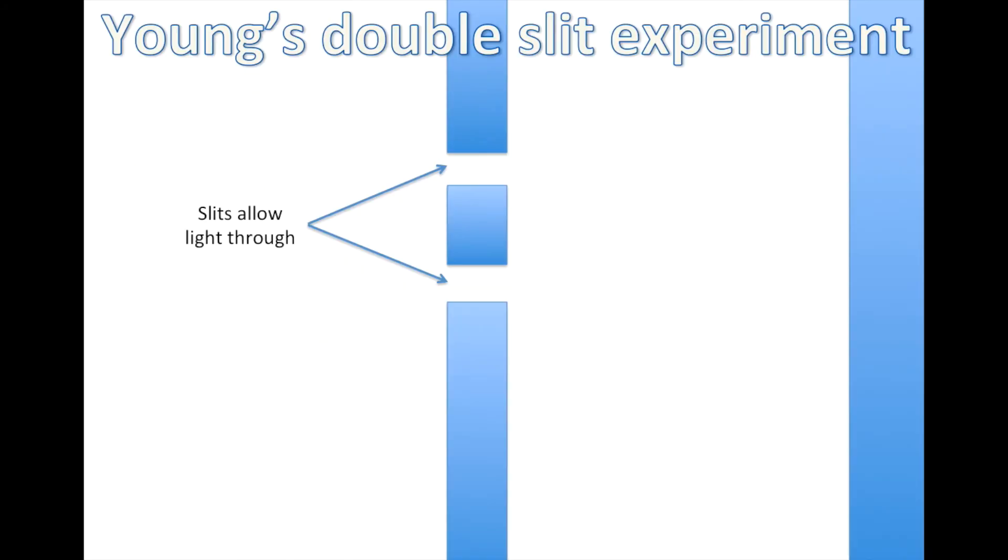Now let's look at some evidence of light being a wave. So this is Young's double slit experiment. So as you can see, we got an obstacle with two slits and a background. And the slits allow light through.